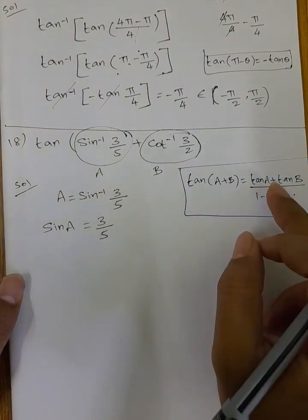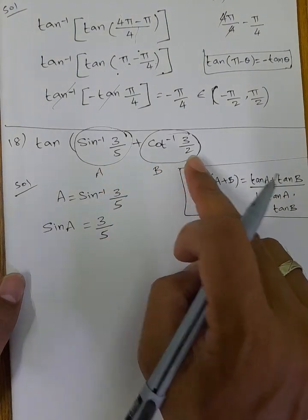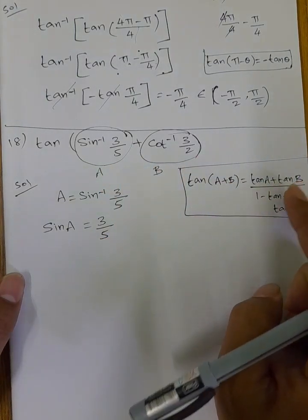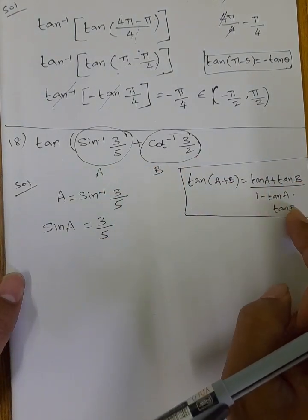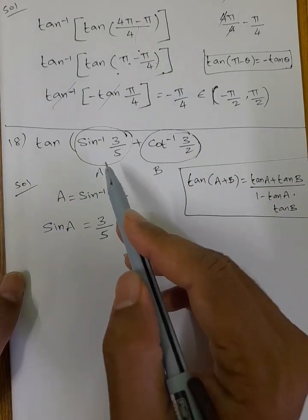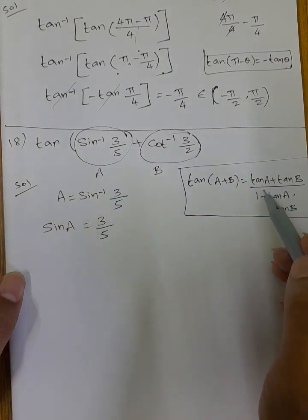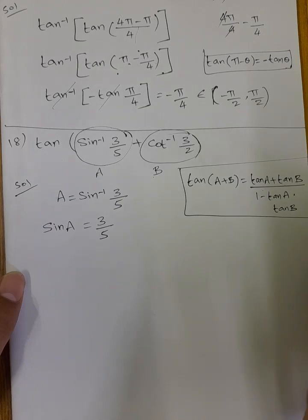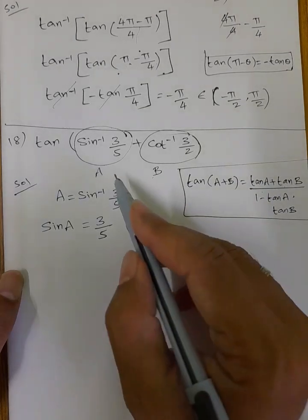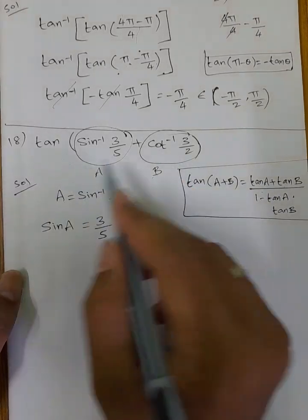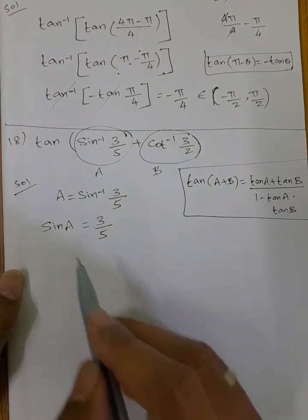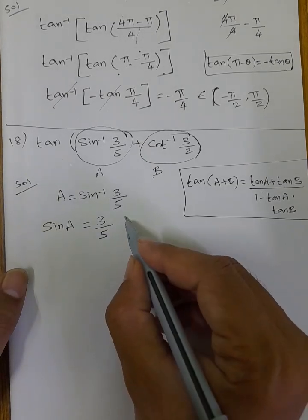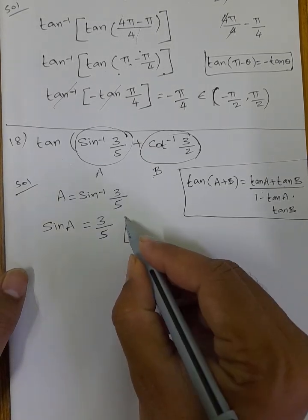Using tan(A+B) = (tan A + tan B) / (1 minus tan A into tan B). We have sin A = 3/5. We need to find tan A from sin A.